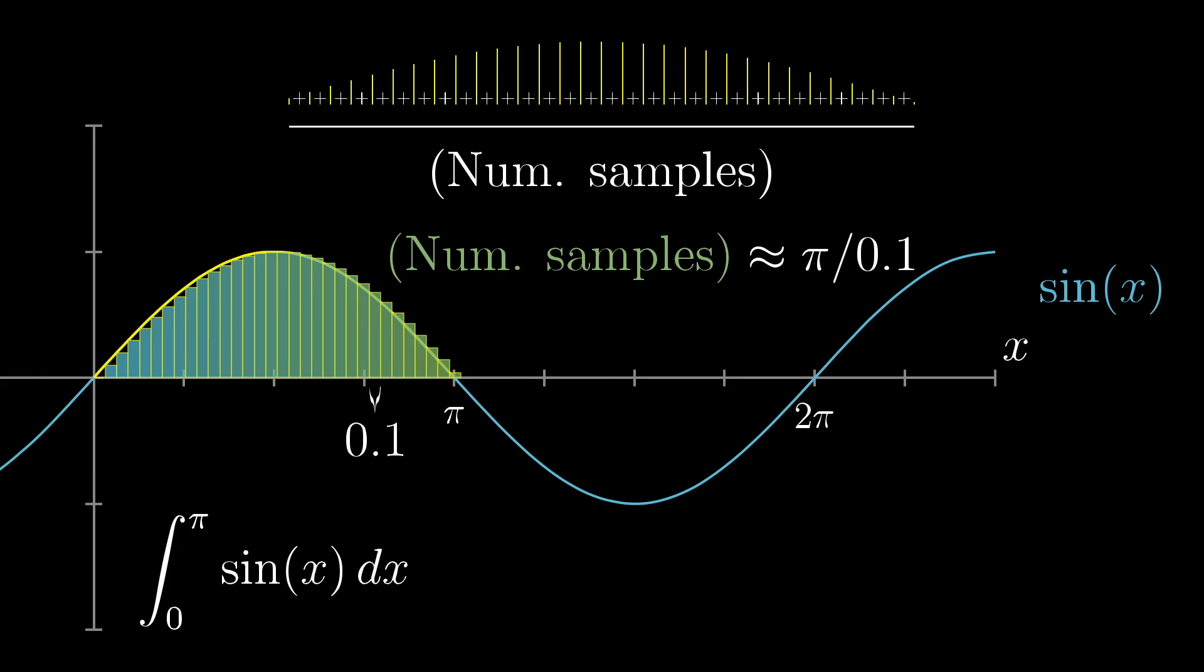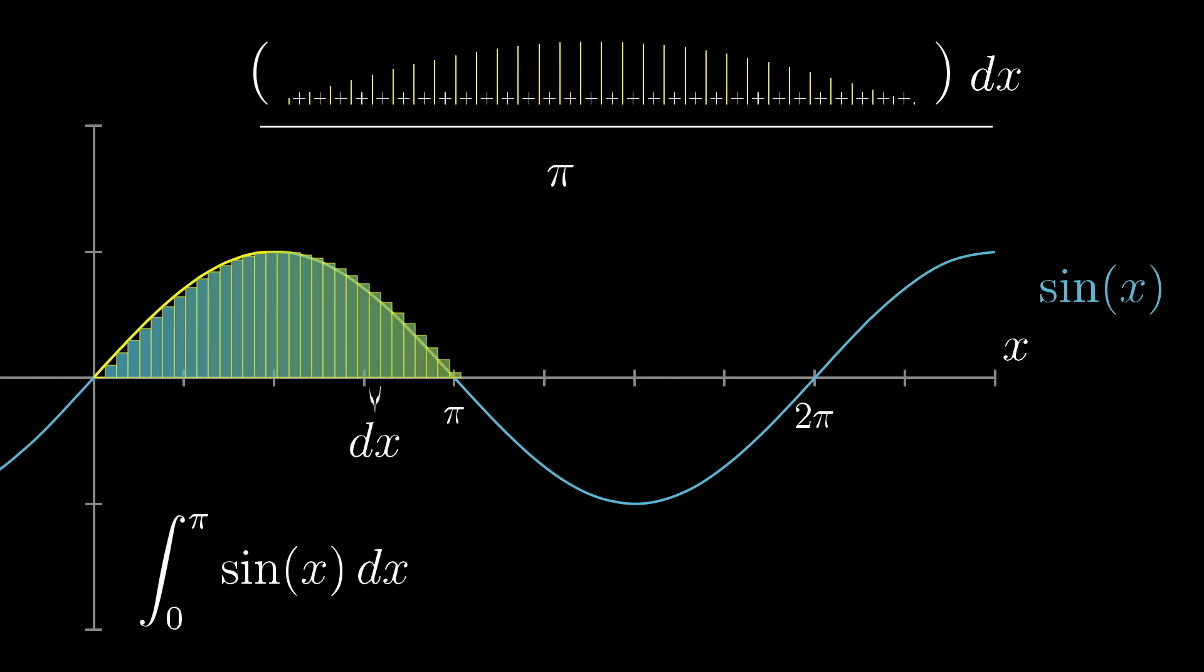If it doesn't go in perfectly evenly, you would have to round down to the nearest integer, but as an approximation, this is completely fine. So if we write that spacing between samples as dx, the number of samples is pi divided by dx. And when we substitute that into our expression up here, you can rearrange it, putting that dx up top and distributing it into the sum.